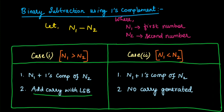We consider two numbers as n1 and n2. n1 is the first number, n2 is the second number. We are going to subtract the second number from the first number. There are two cases in this binary subtraction. Case 1 is if n1 is greater than n2. The first step is: n1 plus one's complement of n2.